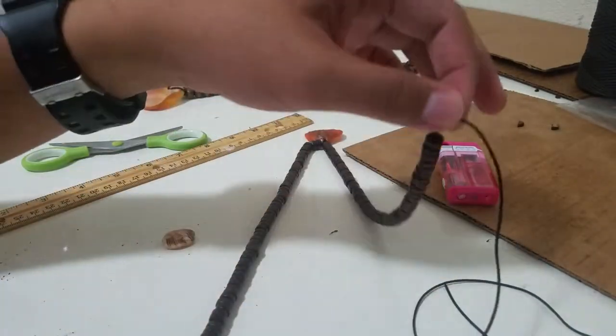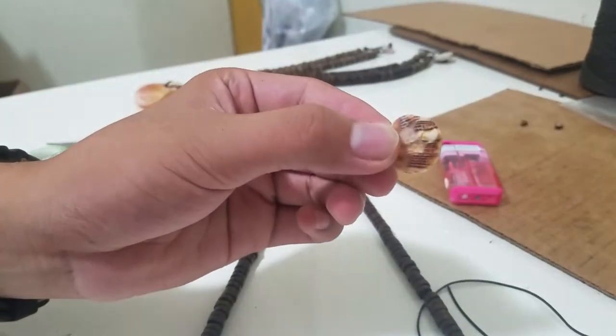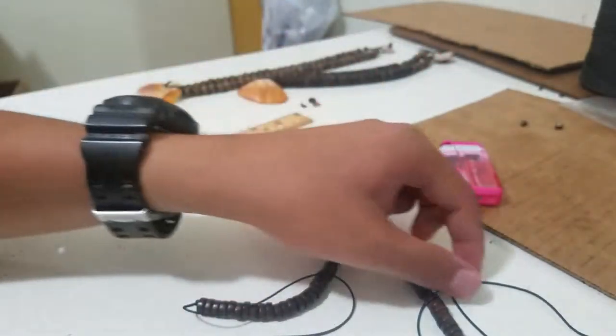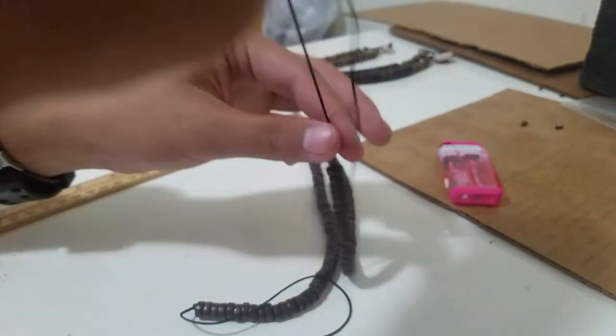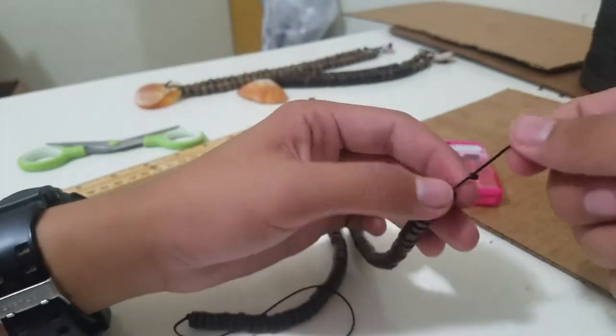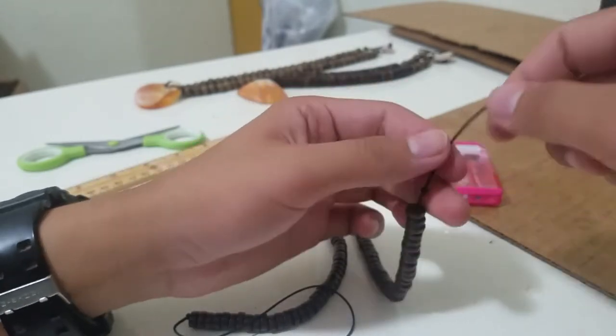On the right side will be the clasp or lock shot, whatever you want to call it. Then on the left side will be the overhand knot. So on this side, I'm going to tie another knot higher, about an inch away.